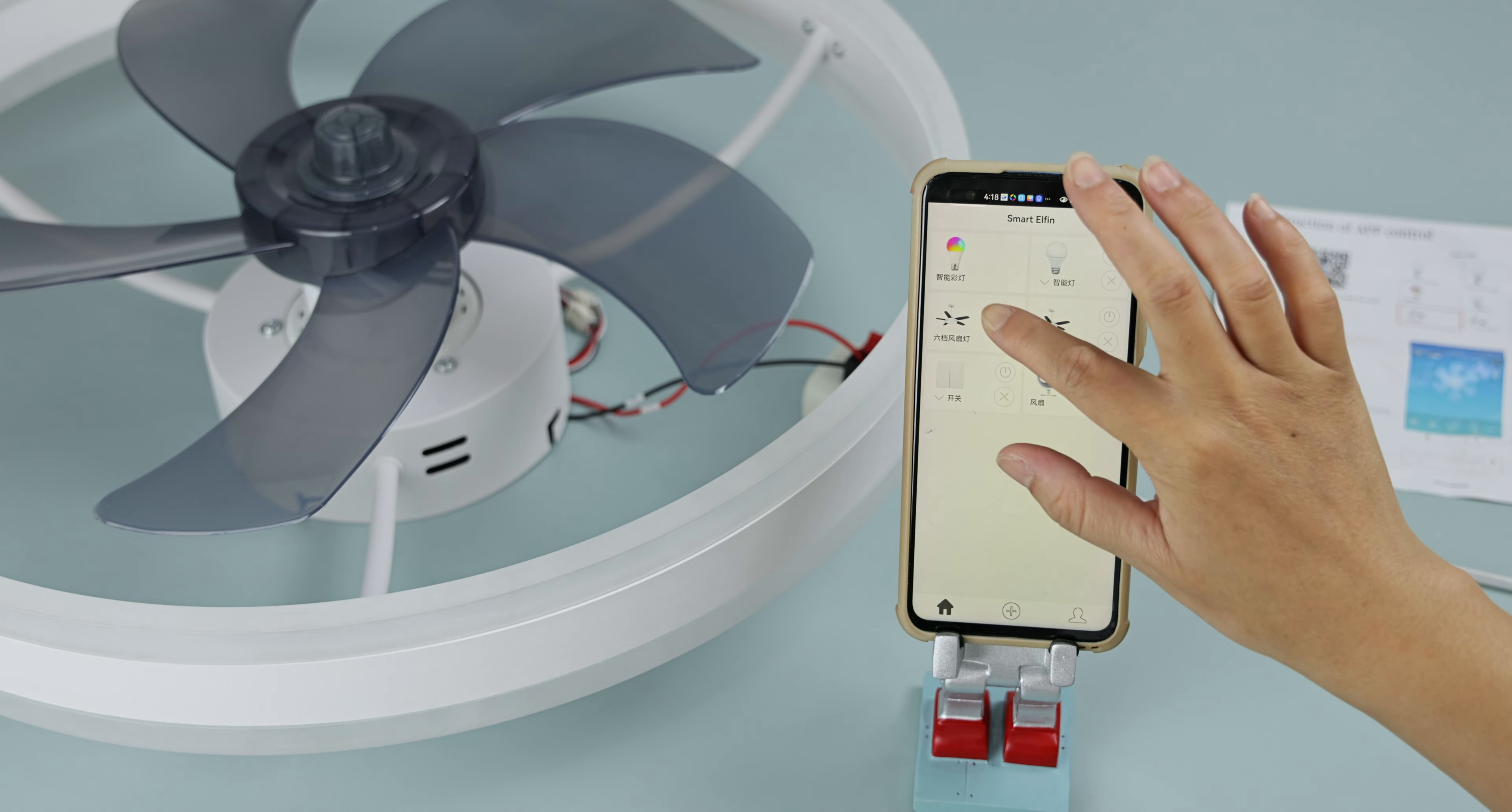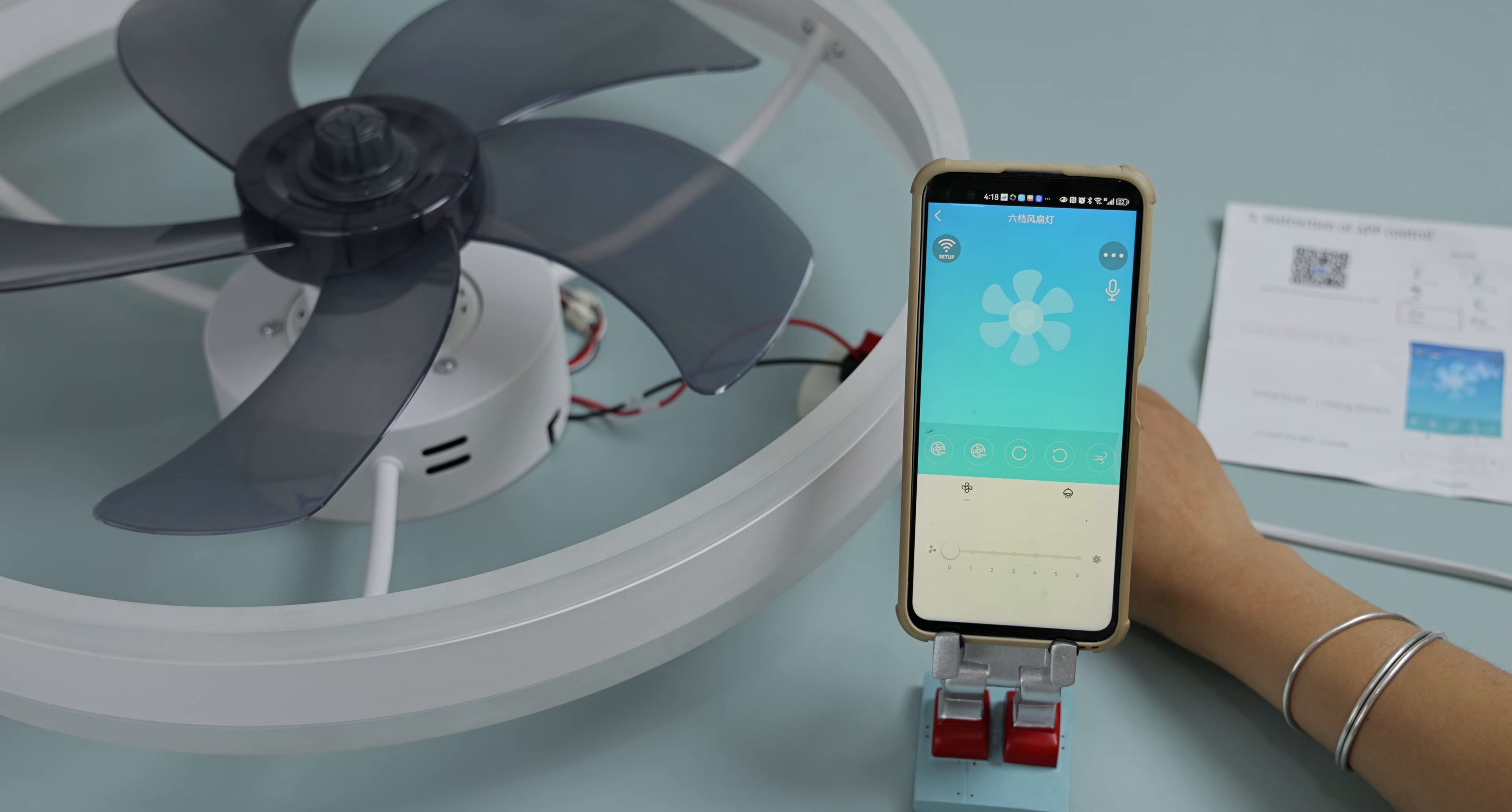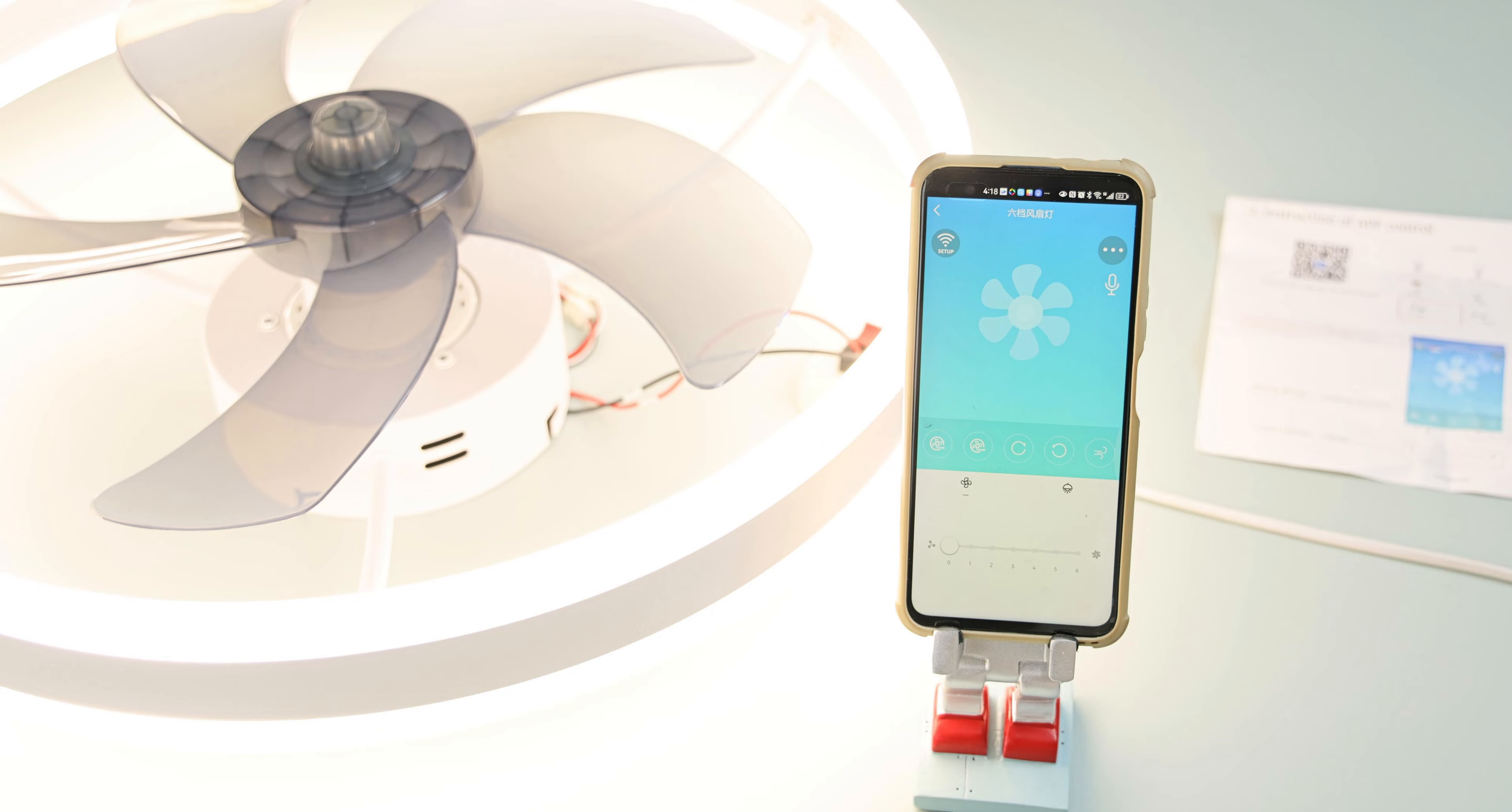Select the fan light with six settings. Attention: turn on the light first. Then click Setup in the top left corner within five seconds after turning on the light to complete pairing.